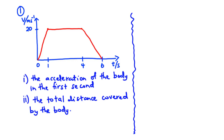Hello guys and welcome back to this channel. This is Can City Academy and in today's video we are going to solve two questions on the Nov/Dec 2020 interscience paper. For this question we have a velocity-time graph of a body, and we are going to find the acceleration of the body in the first second for part i, and then for part ii we are going to find the total distance covered by the body.